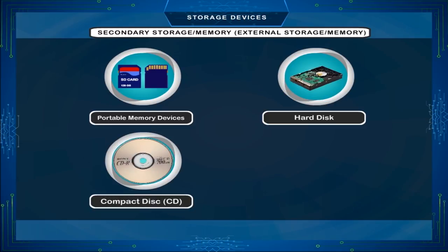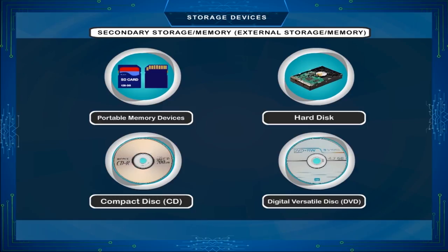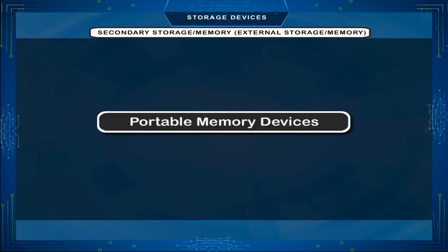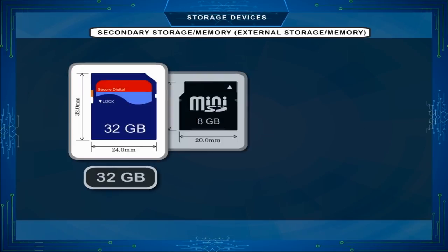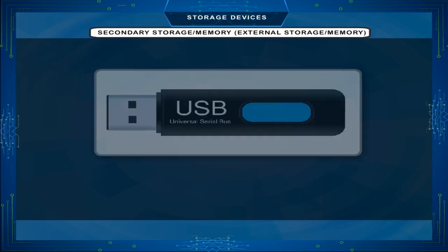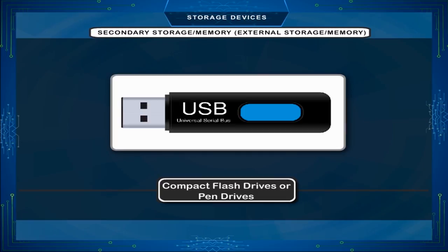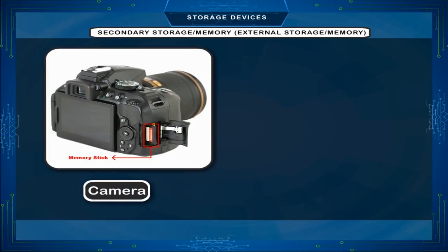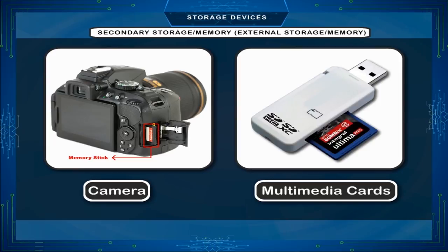The different types of secondary storage devices are: portable memory devices, hard disk, compact disk or CD, and digital versatile disk or DVD. Portable memory devices are a range of memory cards of different sizes and different digital memory capacities. Most commonly seen are USB-based compact flash drives or pen drives, memory sticks used in cameras, and multimedia cards. Many of these have a capacity of 128 GB storage.